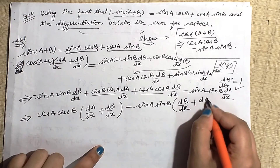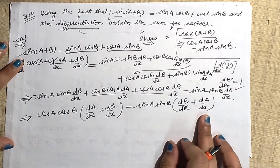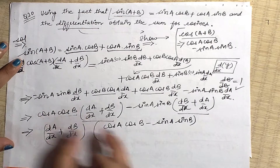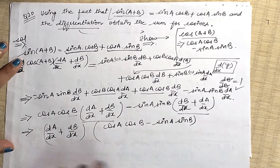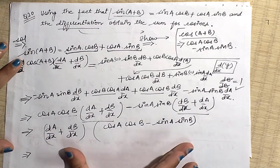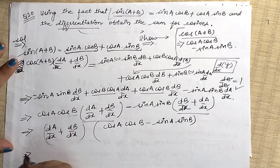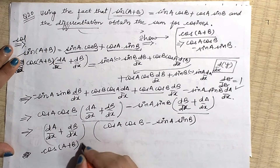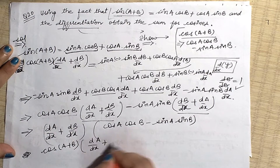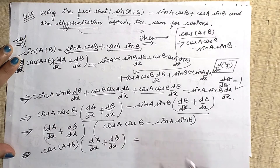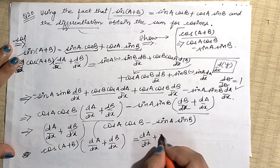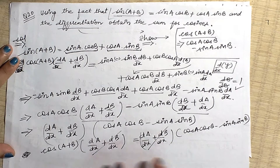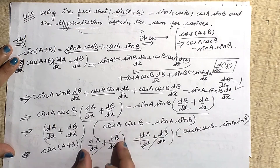Looking again, something is common from both terms: cosA cosB from the first and −sinA sinB from the second. So the right hand side can be written as (cosA cosB − sinA sinB) times (da/dx + db/dx). Now look at the left hand side — it was cos(a+b) times (da/dx + db/dx), and the right hand side also has the same (da/dx + db/dx) as a product factor, so clearly these cancel.